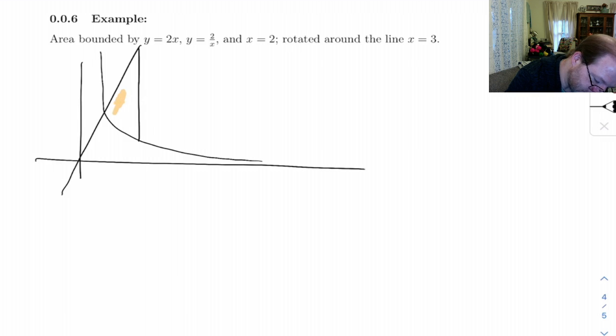So this is the area we're interested in. And just to kind of double check this, these two curves, 2 over x and 2x, those meet right here, and this is right above 1. This is the line at x equals 2, and here's 3.